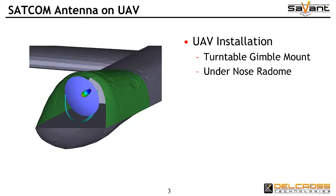A CAD model has been imported into Savant for the host platform, a UAV aircraft body. The parabolic antenna structure is placed within the forward sensor compartment of the UAV body. Starting with Savant version 4, the scene tree capability enables you to use and place multiple CAD bodies with the ability to apply local and global rotations and translations of the bodies and of subassemblies.